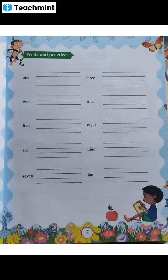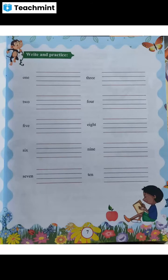You need to write these number names in these four lines: one (O-N-E) 1, two (T-W-O) 2, five (F-I-V-E) 5, six (S-I-X) 6, seven (S-E-V-E-N) 7, three (T-H-R-E-E) 3. These number names are given in your textbook on page number seven.